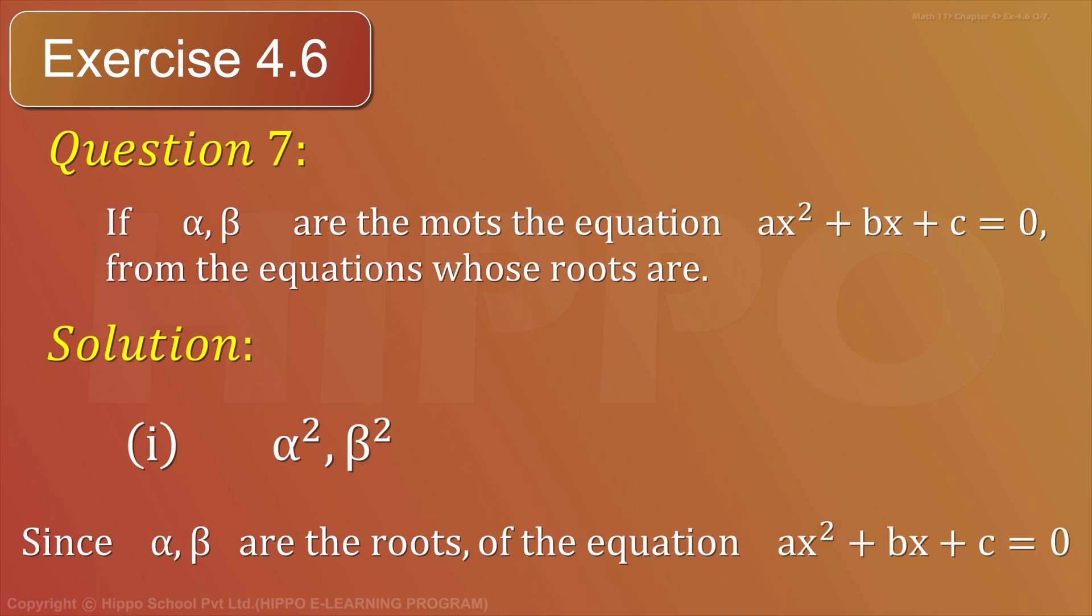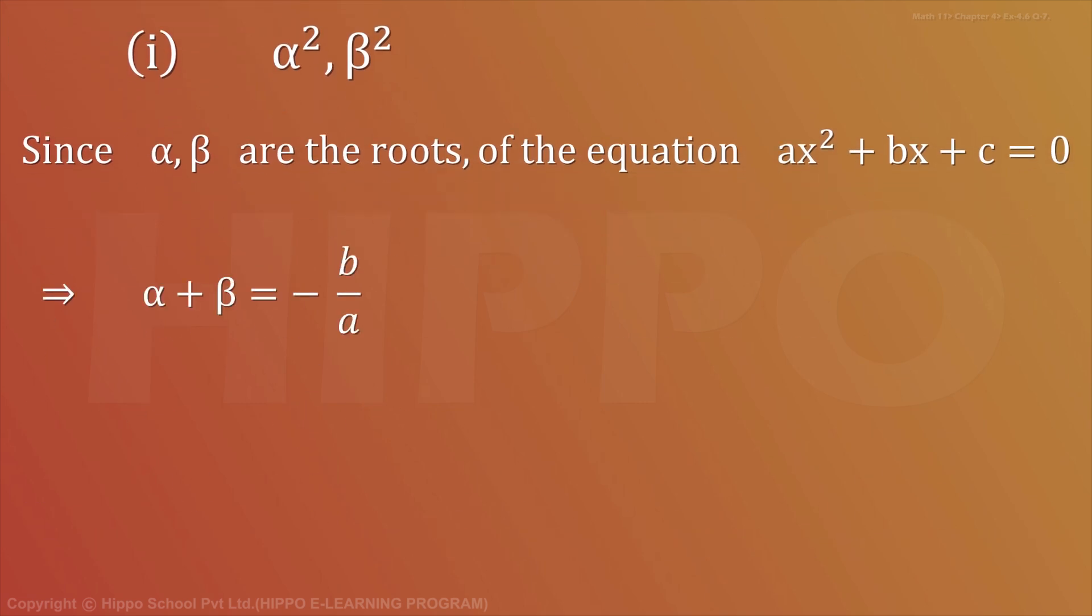Since α, β are the roots of the equation ax² + bx + c = 0, then α + β = -b/a, which is equation number 1, and αβ = c/a, which is equation number 2.